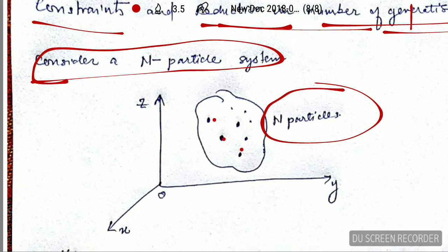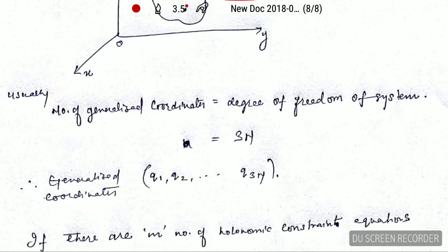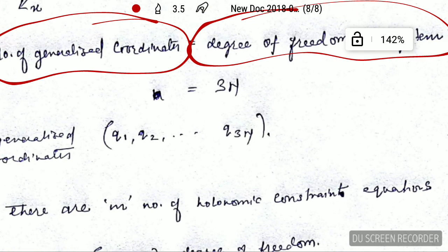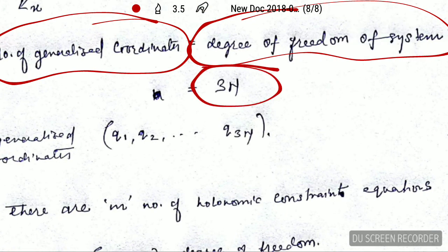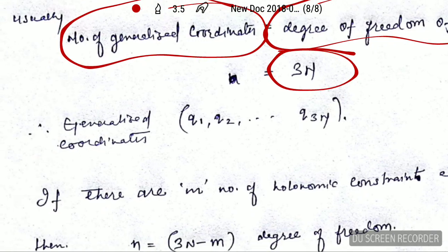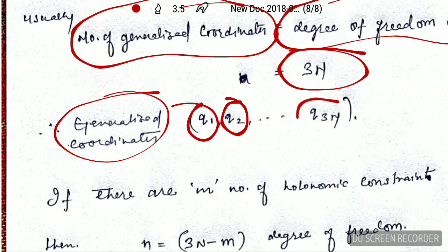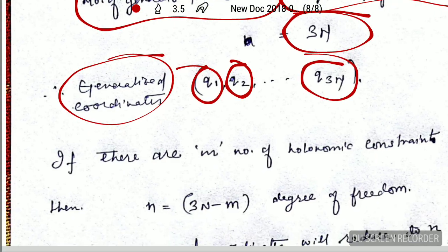Now, usually the number of generalized coordinates is equal to the degree of freedom of the system. That means the number of generalized coordinates in general is equal to three n. The generalized coordinates will go from q1, q2, up to q3n. That means there are three n generalized coordinates.